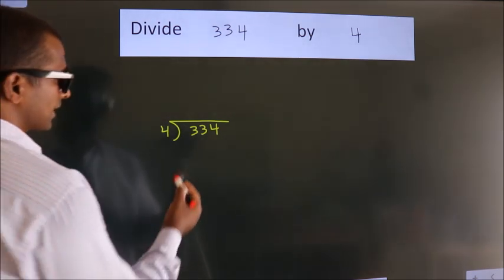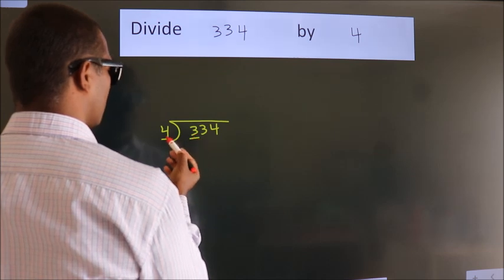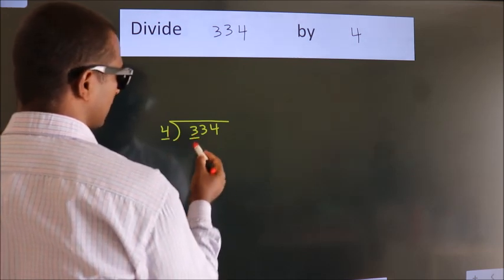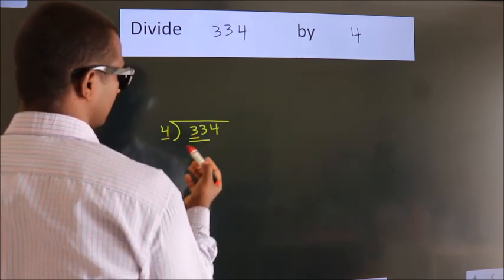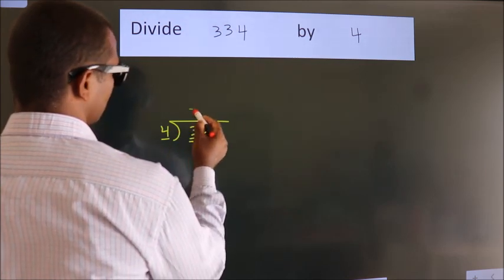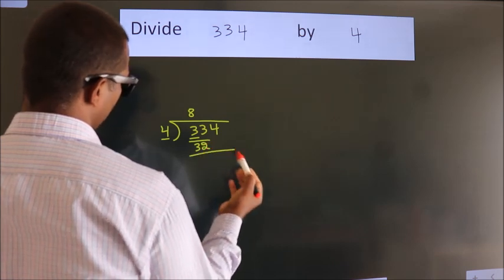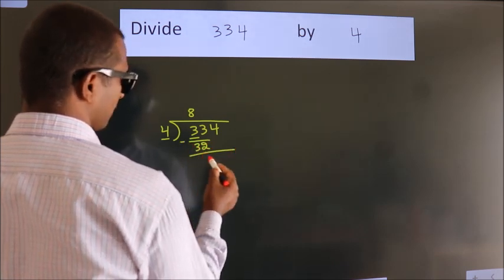Next. Here we have 3, here 4. 3 smaller than 4. So, we should take 2 numbers: 33. A number close to 33 in the 4 table is 4 × 8 = 32. Now, we should subtract. We get 1.